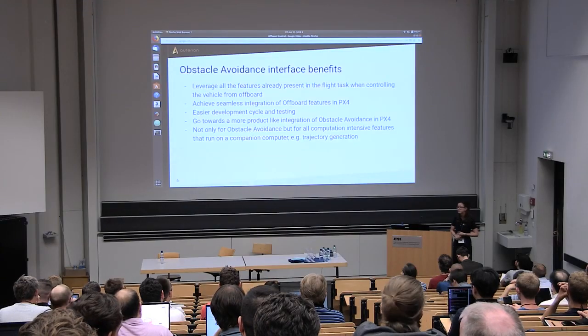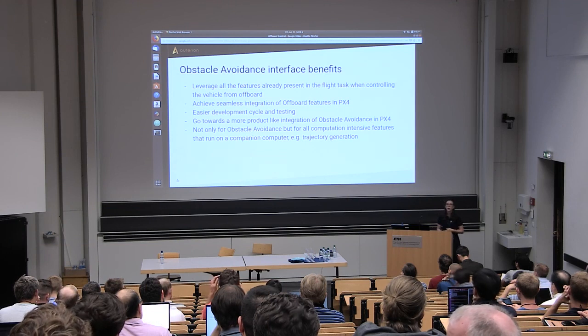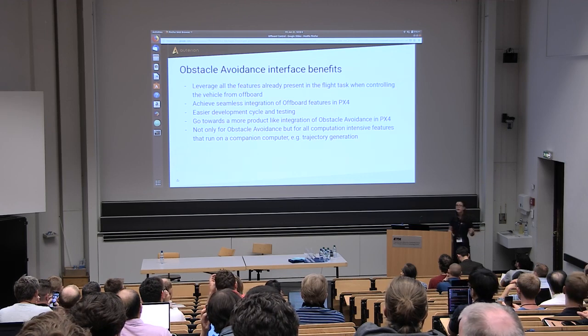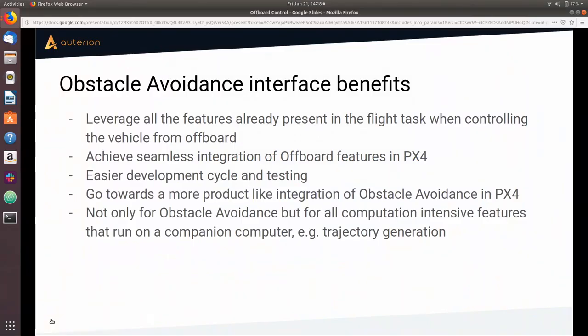From a developer perspective, this also makes life much easier. With the previous off-board setup, when testing obstacle avoidance you had to carry a laptop, a router, SSH into the companion computer to make sure everything was running properly. But now, with this new interface, you can just go out with your vehicle, your RC, and a tablet with QGC, and do everything through QGC — from setting up waypoints to checking that processes on the companion are running fine.